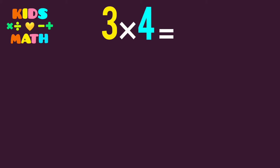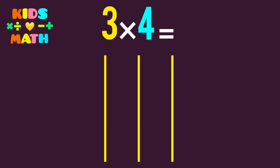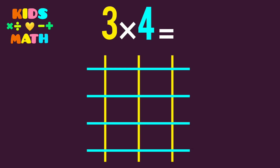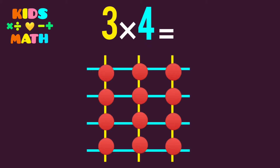3 times 4. The first number is 3, so we derive 3 lines: 1, 2, 3, 4. Then we count the common points.